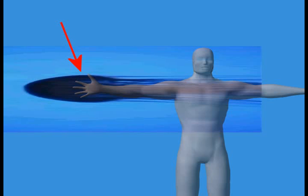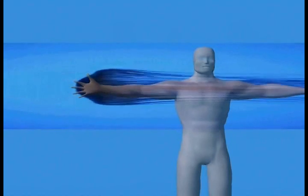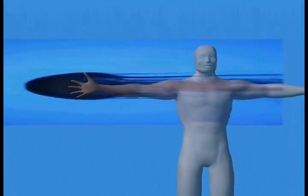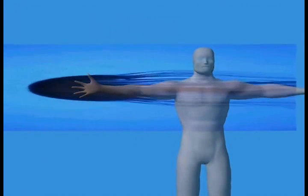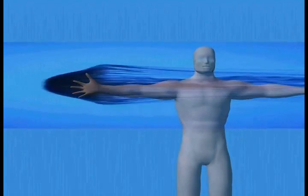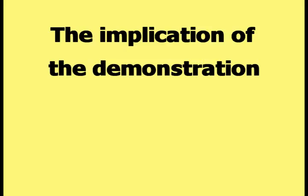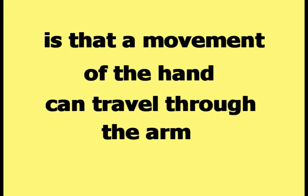This picture shows the main body of the jellyfish superimposed over the hand, with the tentacles of the jellyfish running over the arm and into the body. When the jellyfish is shown moving, the movement of the main body of the jellyfish — which is located at the hand — travels all the way down the tentacles, which are superimposed over the arm and the body. The implication is that a movement of the hand can travel through the arm and into the body.